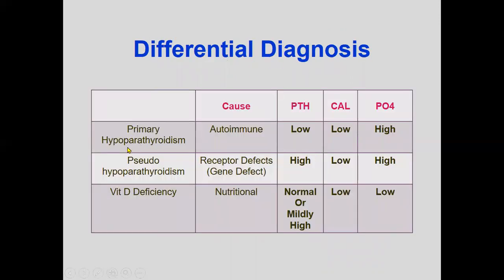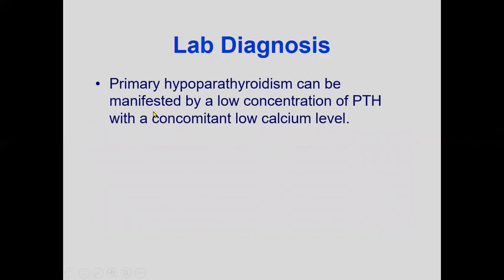In primary hypoparathyroidism, which is autoimmune in nature, PTH is low. In pseudo-hypoparathyroidism, PTH is high due to receptor gene defects. Vitamin D deficiency can also cause hypocalcemia — PTH may be mildly high, low, or normal, and calcium will be low and phosphorus will be low, which differentiates it from these other conditions.